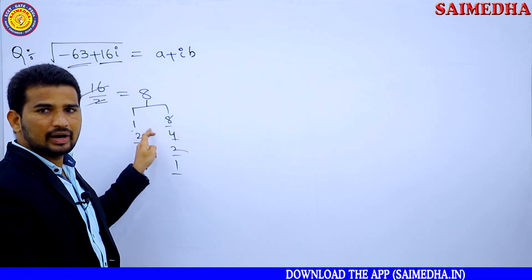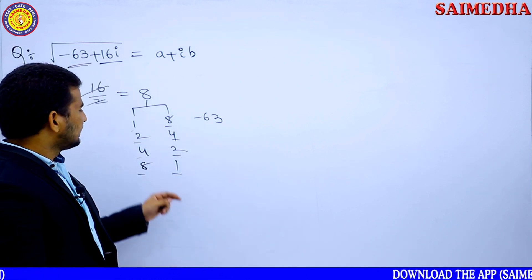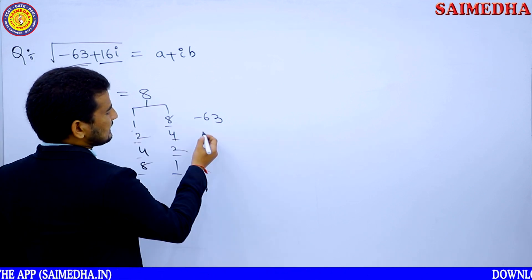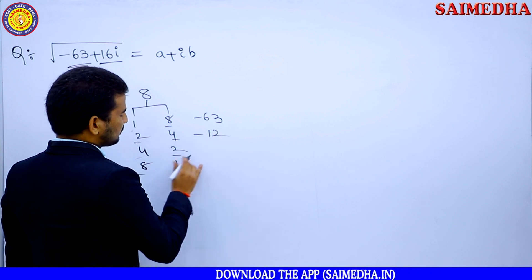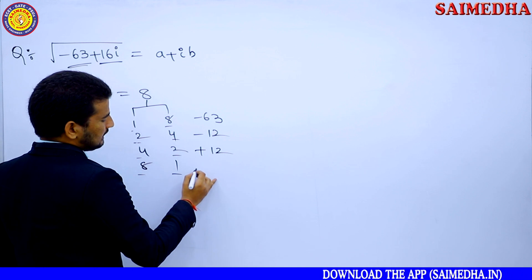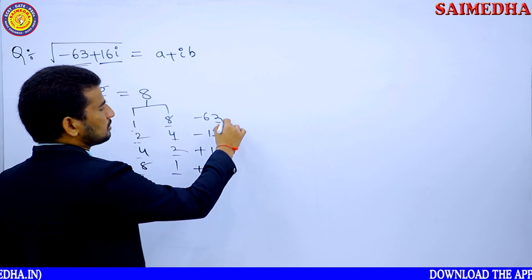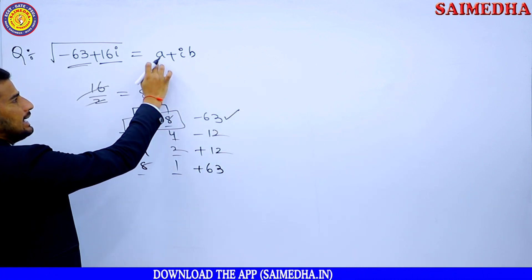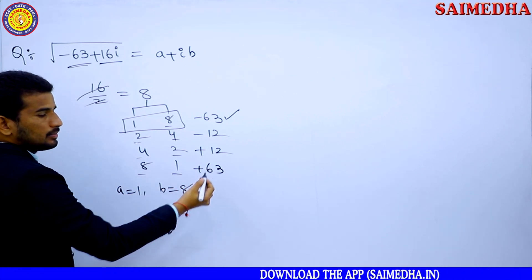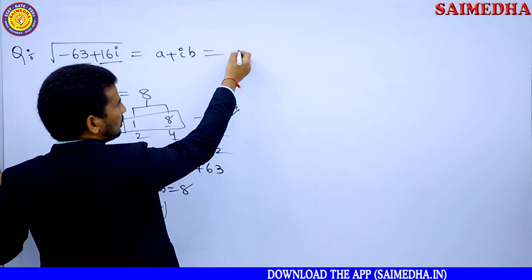So the correct answer comes from the pair where the square difference equals -63. Checking the others: 2² = 4, 4² = 16, so 4 - 16 = -12. The mirror image gives +12, and the other pair gives +63. So the correct combination is a = 1 and b = 8.